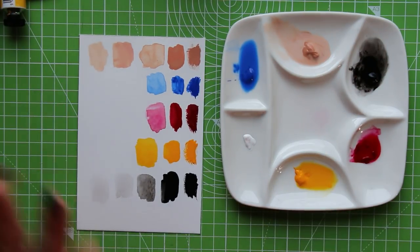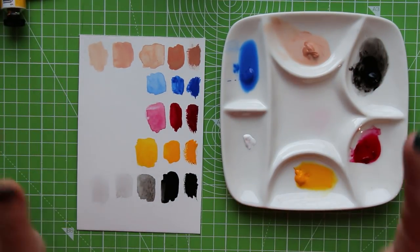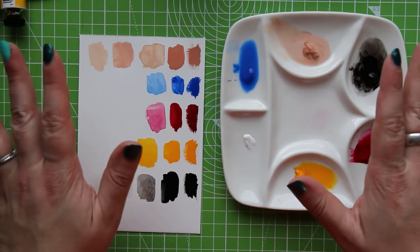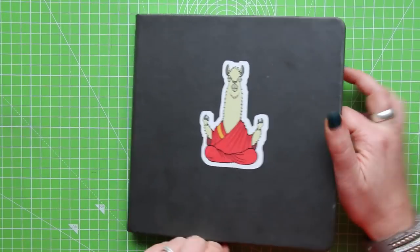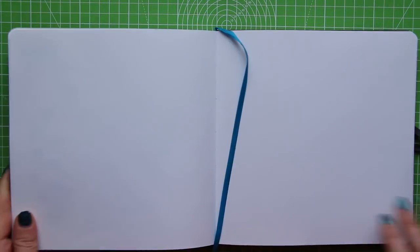There we go so that is a sort of brief overview of gouache. I am delighted with this scrawler box absolutely delighted. Right let's get some sketching done see if we can do this prompt.